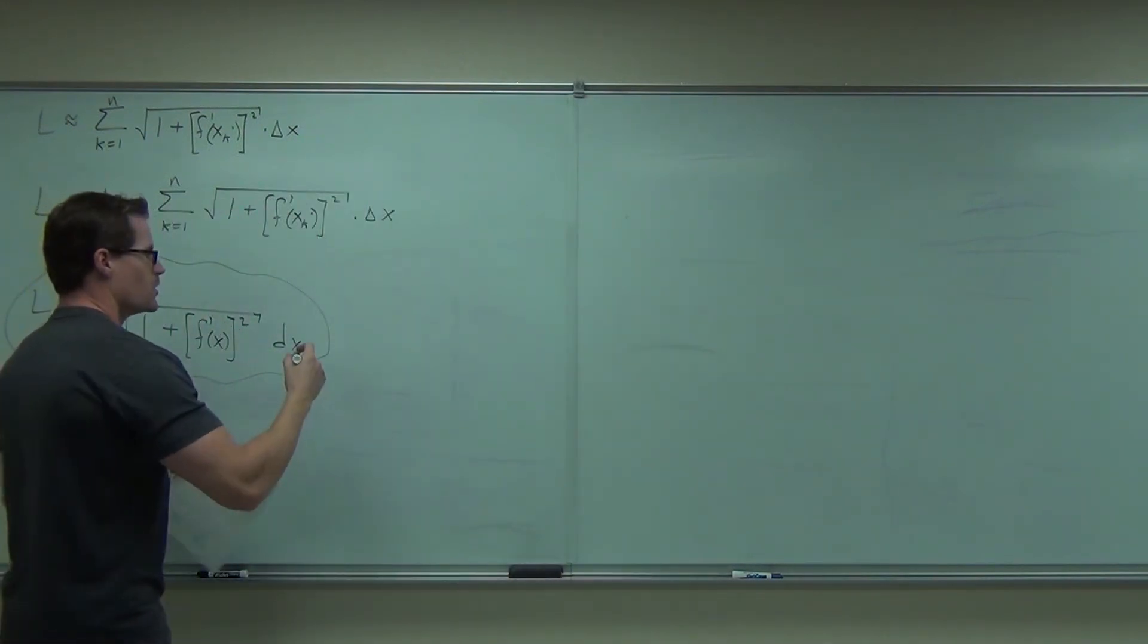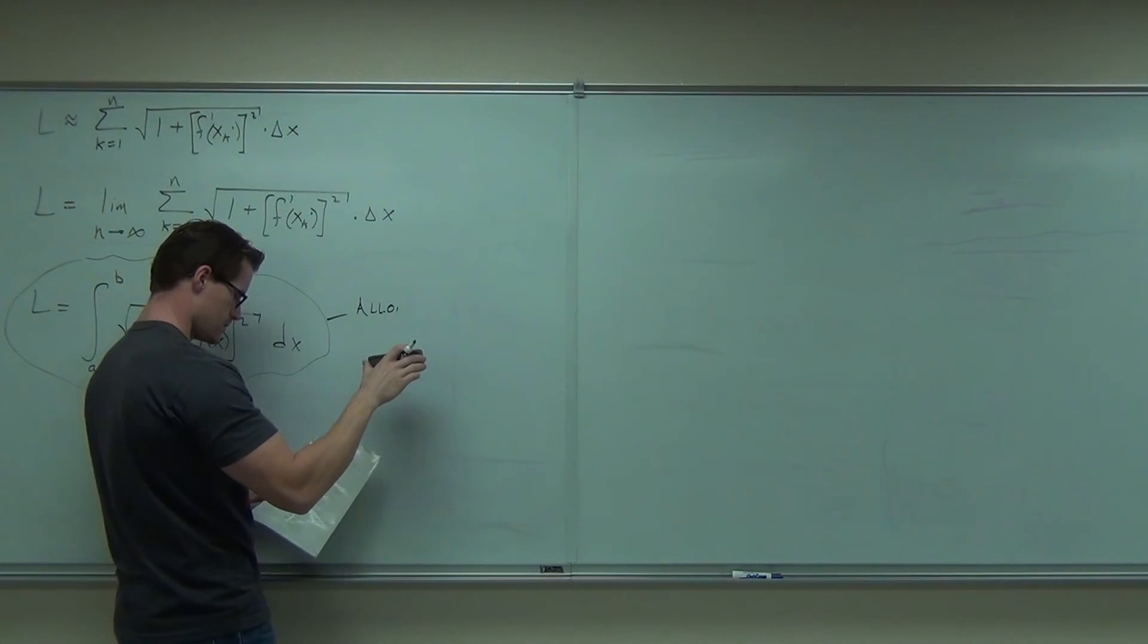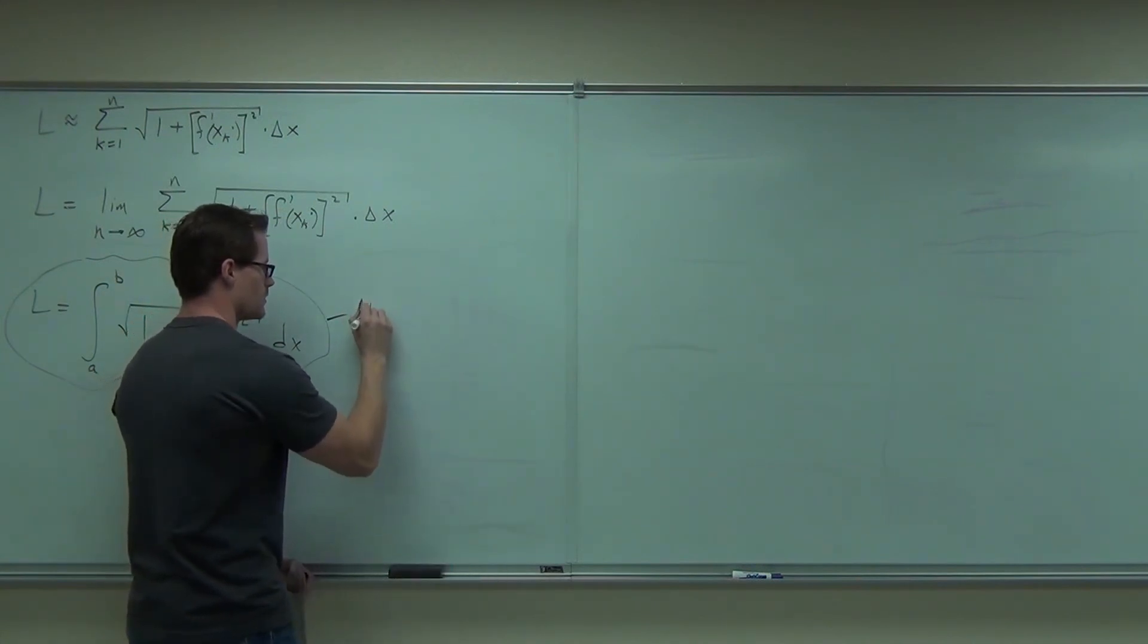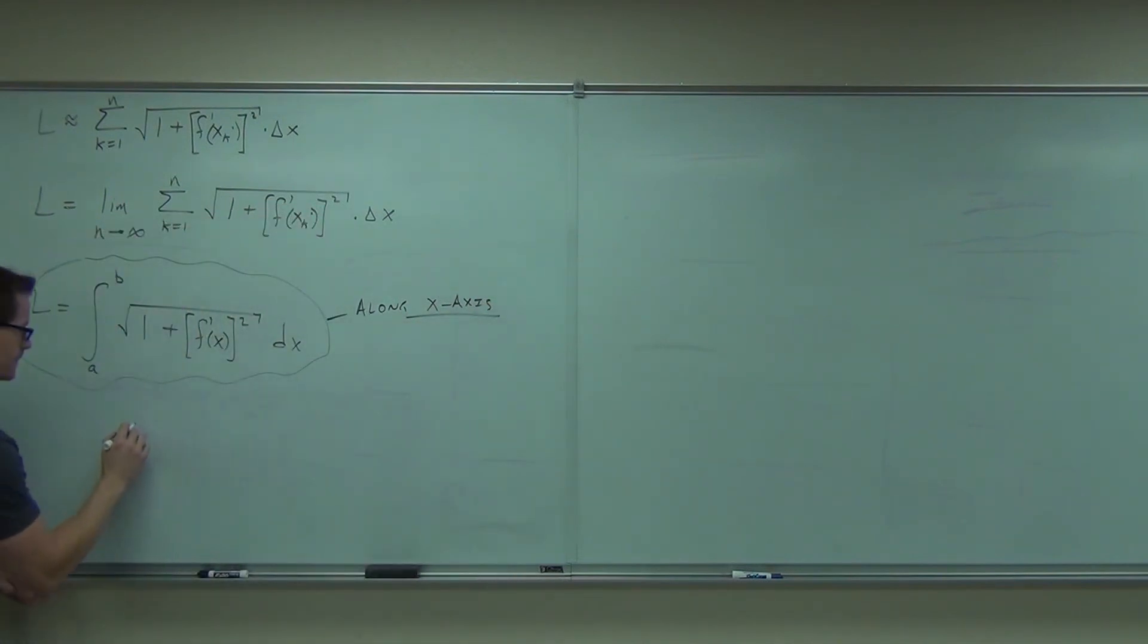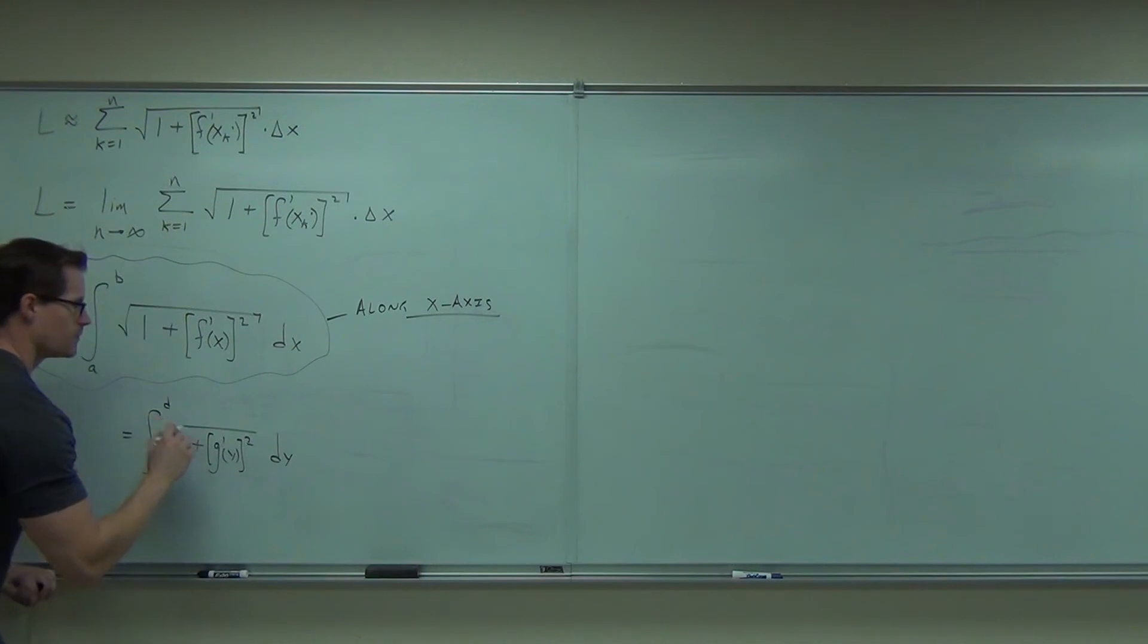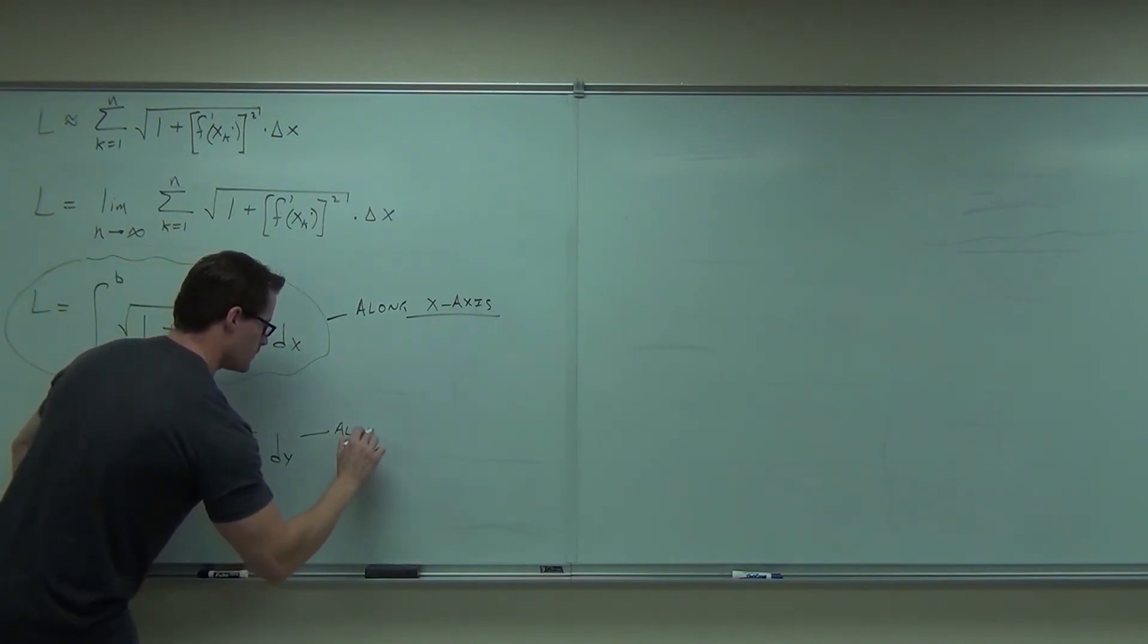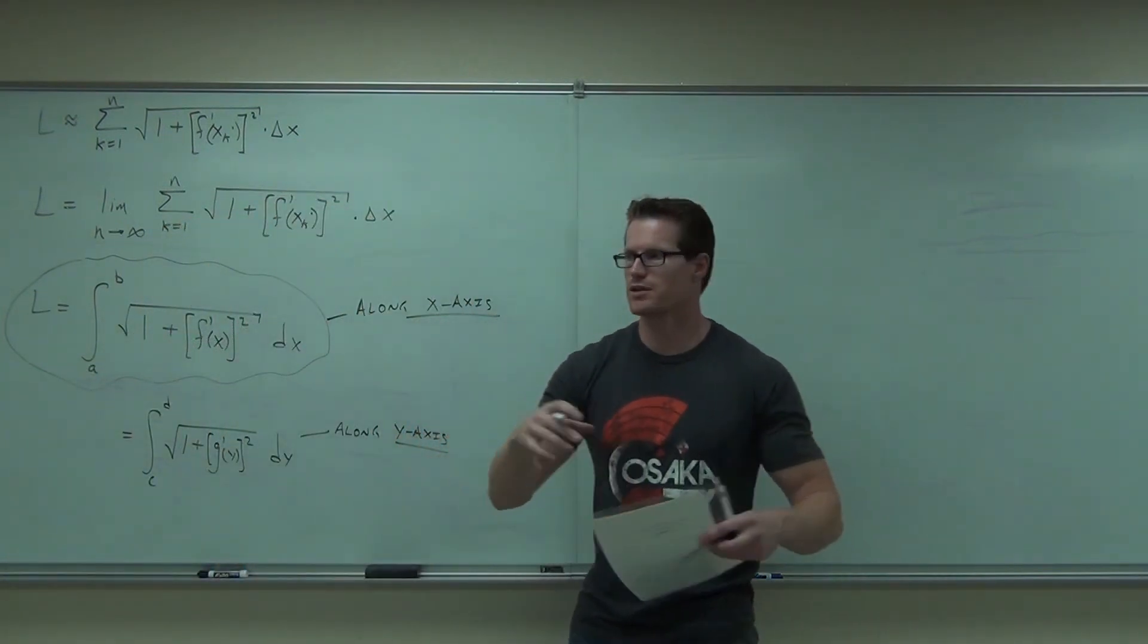So this is a length of a curve. Note that this is along which axis? The x-axis. So these are back to matching up along the x in terms of x, along the y in terms of y. And that matches.